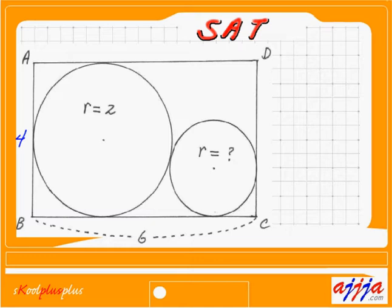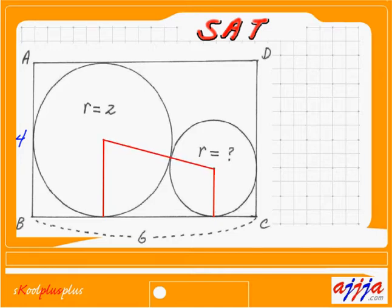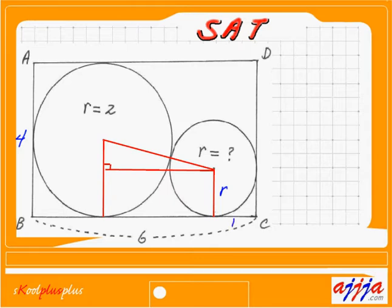We need to add some additional lines to help us. I'm going to put a line right here — just like this. Now, what about this radius of the small circle? I'm going to add as many lines as possible so I can form a right triangle. That way I can use the Pythagorean theorem.